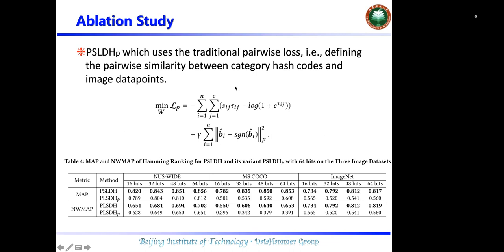After defining the pairwise similarity, the pairwise loss can be defined accordingly, and this loss is then used to supervise the hashing model during training. The results are shown in the paper. It can be found that by using our proposed partial softmax loss as the objective function, the model achieves better performance, which means our partial softmax loss enables the model to generate hash codes that preserve more semantic similarity information sufficiently.